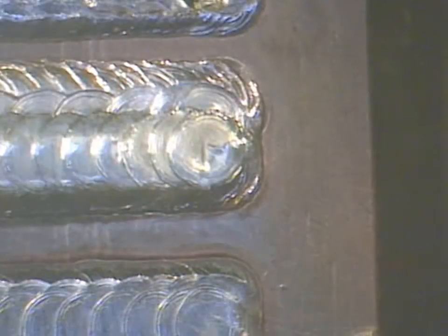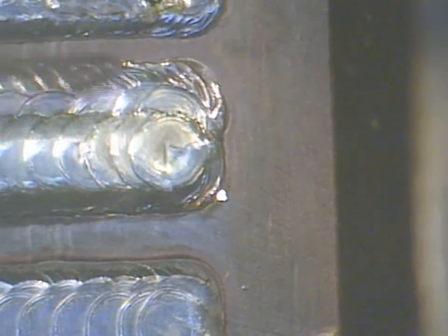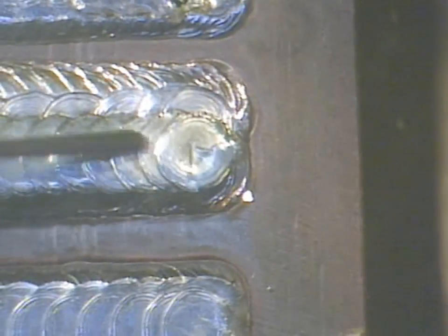So you can definitely see the three layers there. You've got the green copper, the H13, and the aluminum bronze at the top.